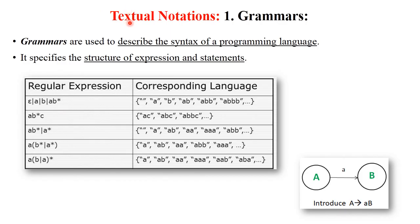The next type is textual notation. The first type is grammars. Grammars are generally used to describe the syntax of programming languages — how exactly you write a particular language through a computer. They specify the structure of expressions and statements. This concept is primarily used in the Principles of Compiler Design (PCD) subject or System Programming (SP). Detailed explanations of grammar are available in the linked playlist in the description box.